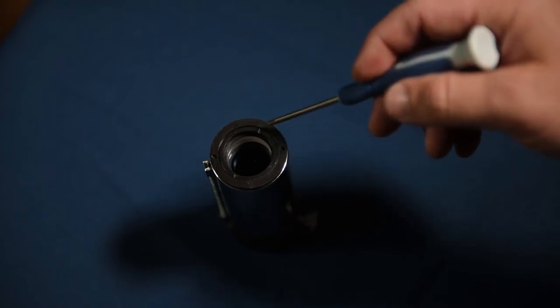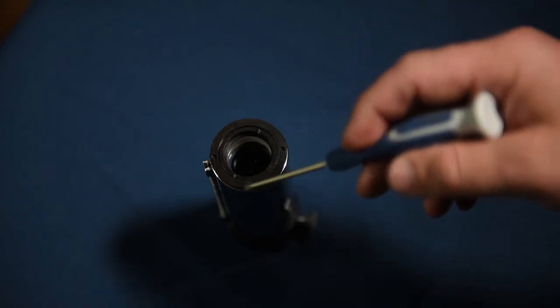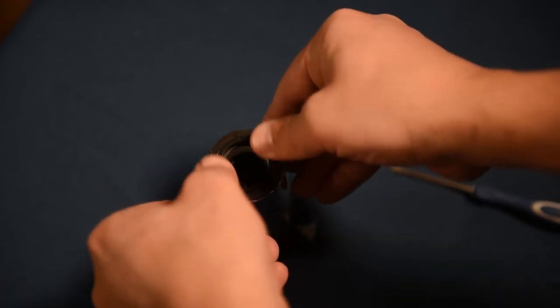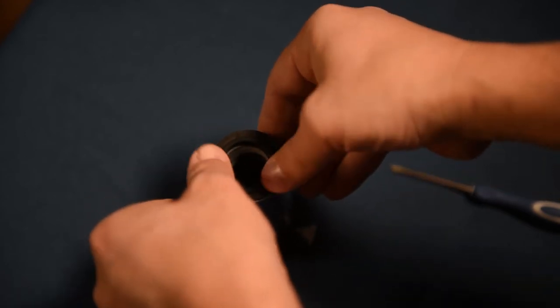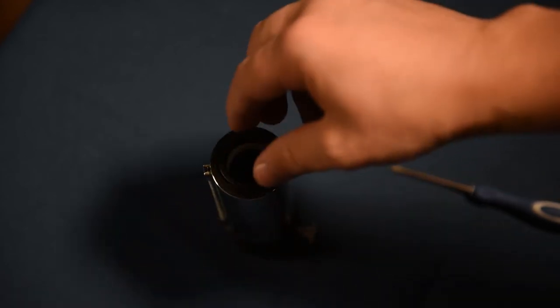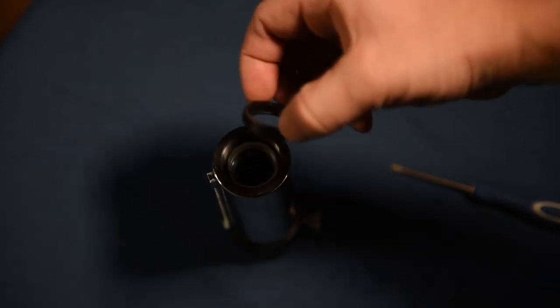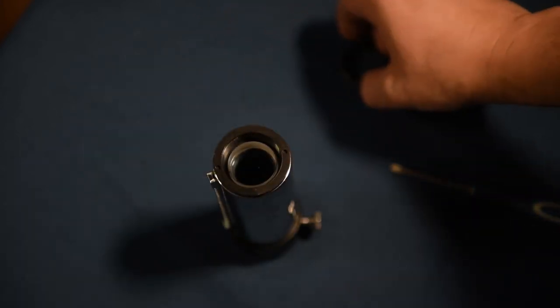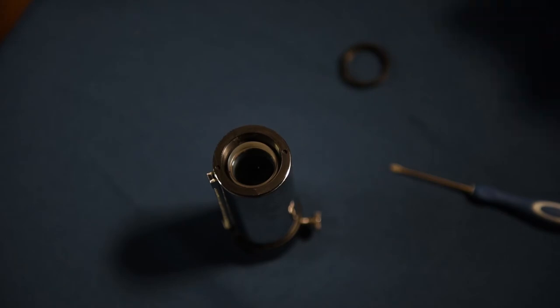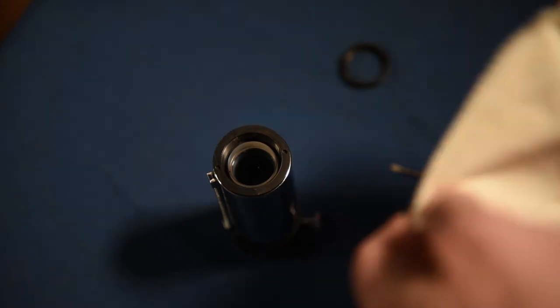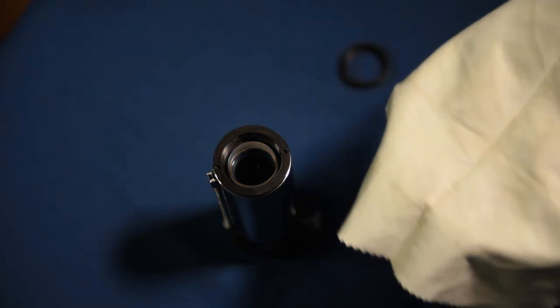And you will notice that this ring that holds the optical lens in place has two little notches on either side. You can actually use that to loosen it up until it comes out. You'll want to set this aside so that you don't lose it. Then very carefully, you'll want to take a microfiber cloth.